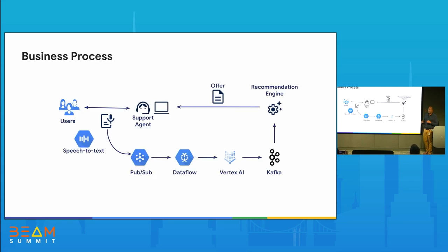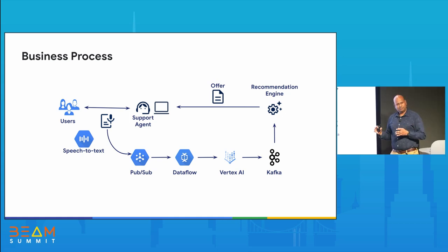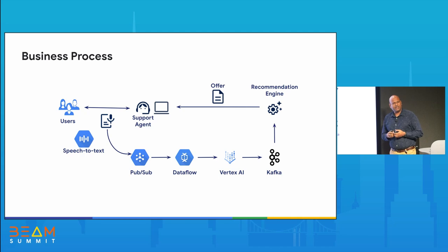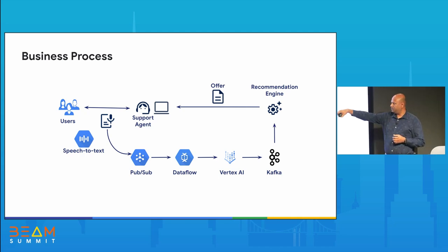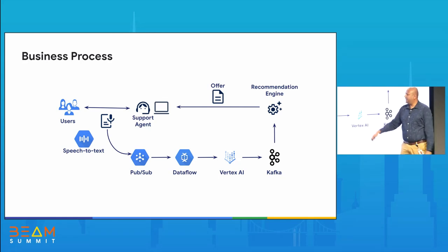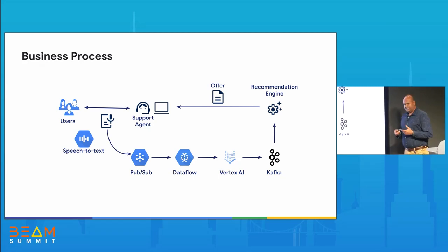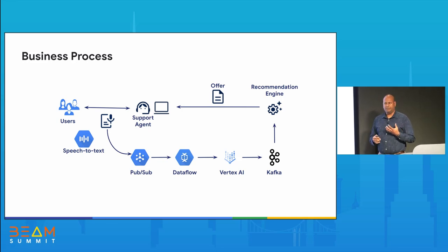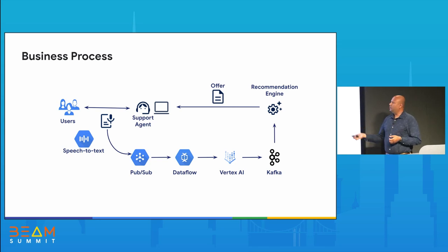The overall scenario we're going to be talking about today is a call center interaction between a user and an enterprise customer service agent. As they're talking, all the speech is getting transcribed in real time and being published to PubSub topics. We focus on that transcribed data, process it, create payloads for scoring by a machine learning model in Vertex AI, and that score gets published out to an enterprise system that determines the next best action to present to the agent helping the customer.